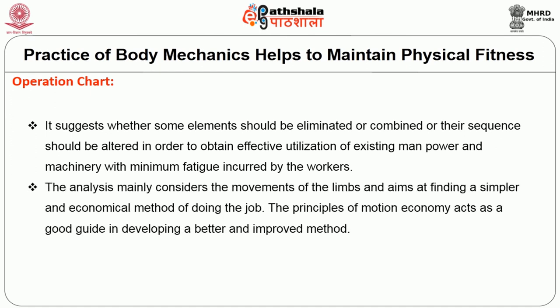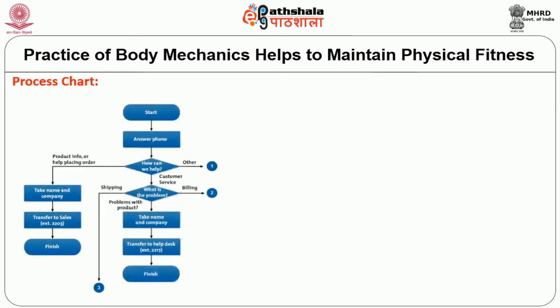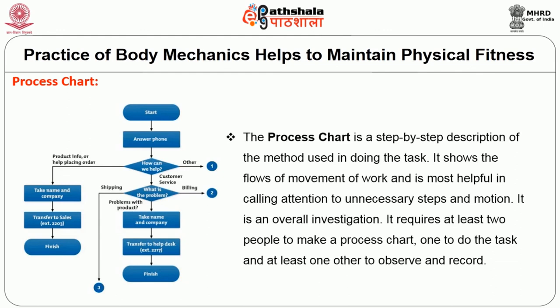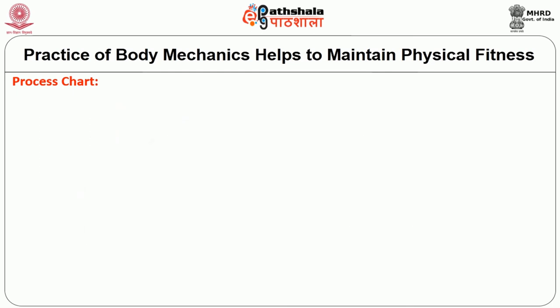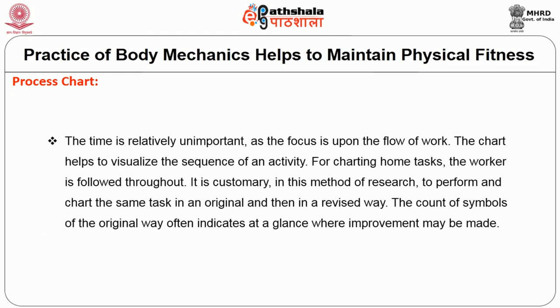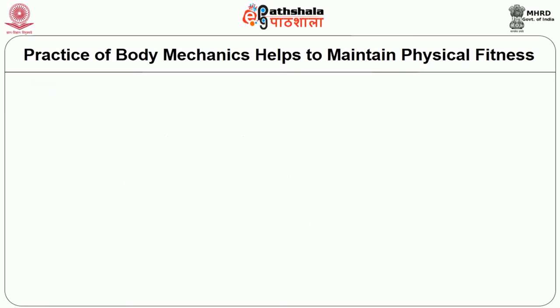Operation analysis considers the movement of limbs and aims at finding a simpler and more economical method of doing the job. The principles of motion economy act as a good guide in developing a better and improved method. The process chart is a step-by-step description of the method used in doing a particular job. It shows the flow of movement of work and is most helpful in calling attention to unnecessary steps and motions. It requires at least two people: one will do the task and the other will observe and record. Time is relatively unimportant as the focus is only upon the flow of work. The chart helps visualize the sequence of an activity.